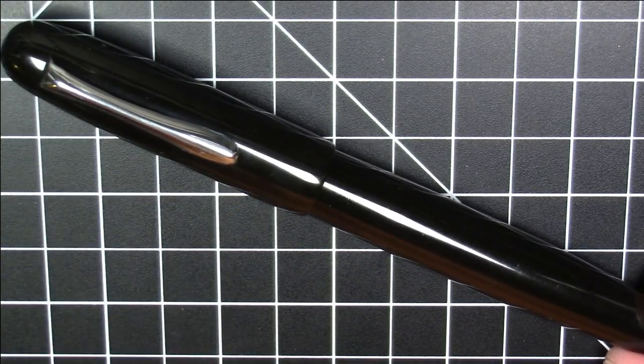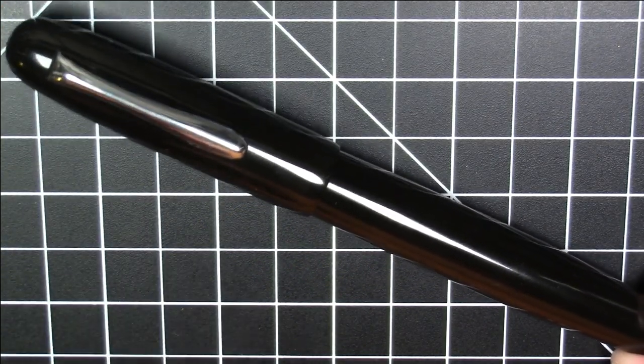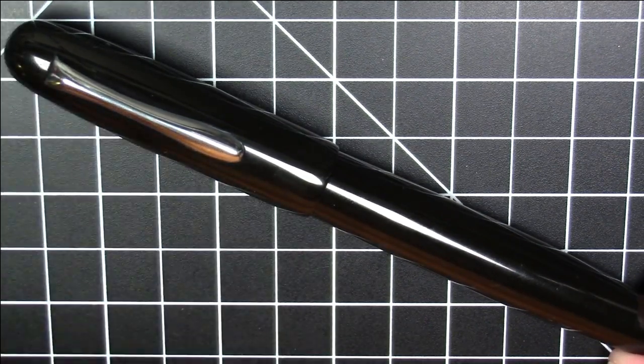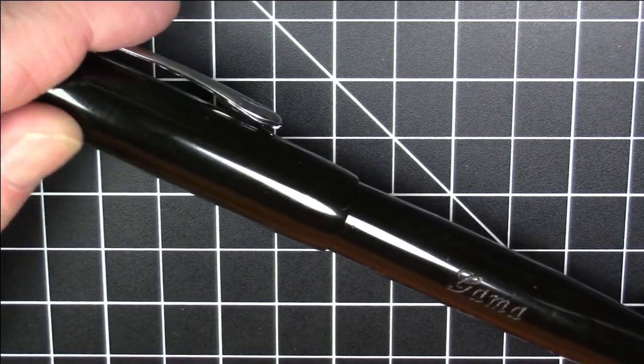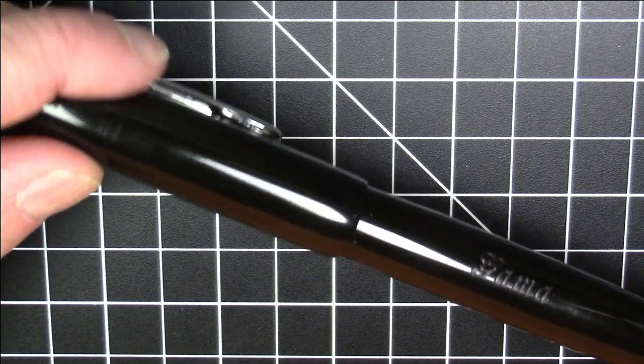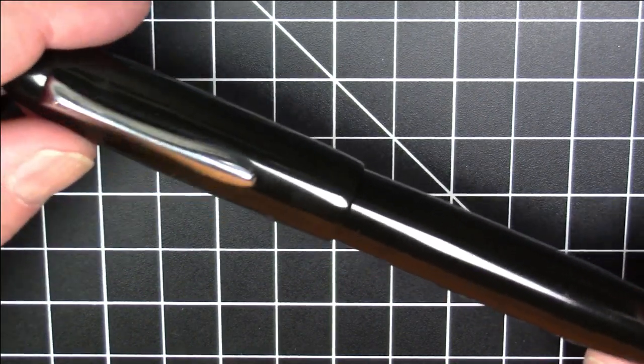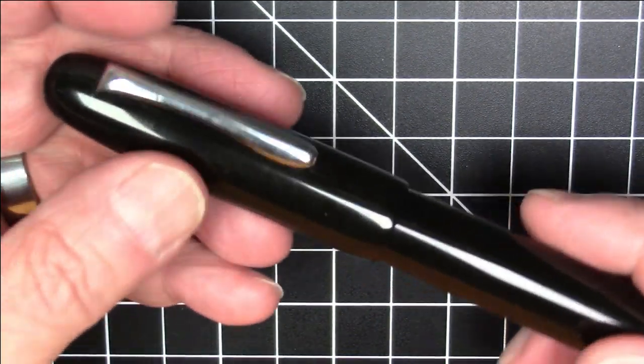Greetings, pen pals. We have another nice pen from India today. This is the Gamma Hawk. So this is a very basic looking pen, black polished ebonite pen. It's a very simple pen in a lot of respects, but a really nice pen.